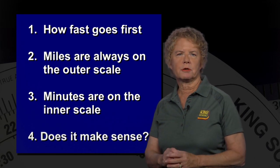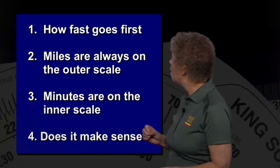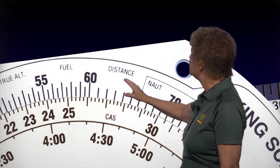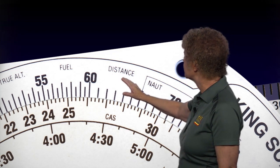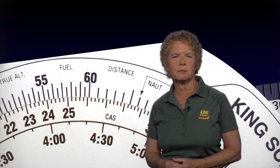The second rule to remember on the flight computer is miles are always on the outer scale. And if you look back at the 60 on the outside scale of the flight computer, it will remind you on the right side of the 60 that distance or miles are always on the outside scale of the flight computer.